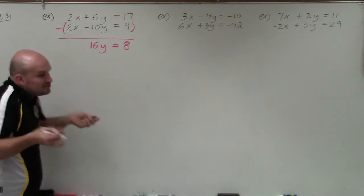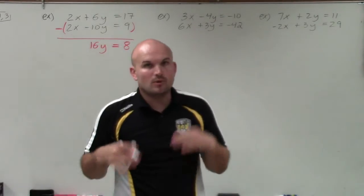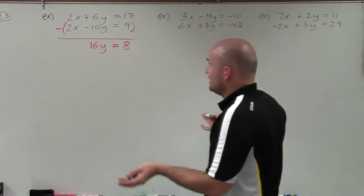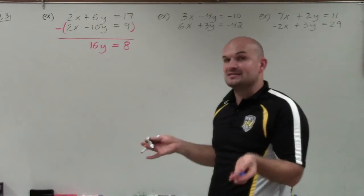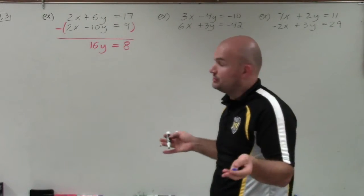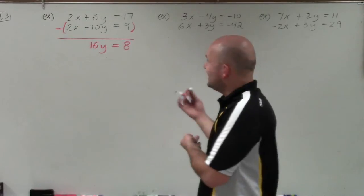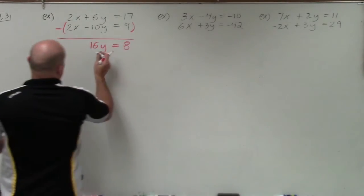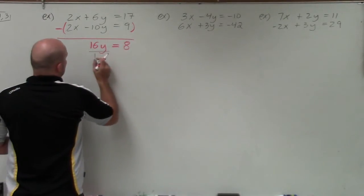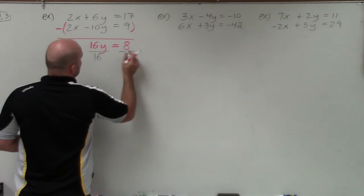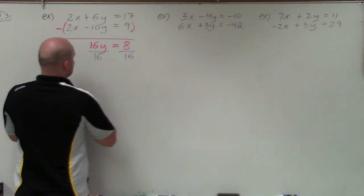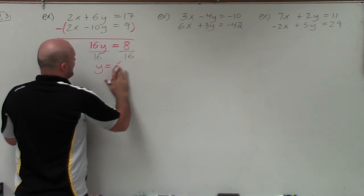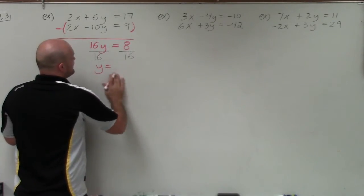By combining the two equations, I have eliminated my variable x because it has a coefficient of 0. Now I can just solve for y. I'll divide by 16 on both sides, and I get y equals 1/2.